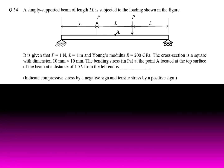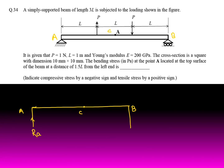Compressive stress is taken as negative and tensile stress is positive. First we will draw the diagram. Let this point be A, this point be B, and the center be C. Reactions at B and C are RB and RC. At distance L from A, force P acts upward; at distance 2L, force P acts downward.